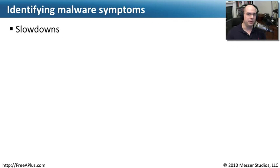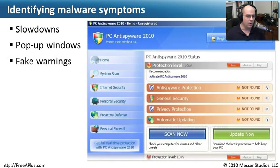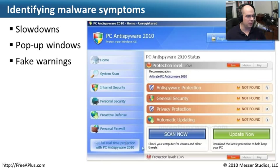If you've ever gotten malware on a computer, you've probably seen the symptoms up close. Your computer might start acting very slow. You might be getting a lot of different pop-up windows when you go into a browser — things that didn't used to happen. Or these days it's a very complex fake warning system. For instance, this malware is called PC Anti-Spyware 2010 — it sounds very official. Although it looks like a legitimate anti-spyware piece of software, this in itself actually is spyware.